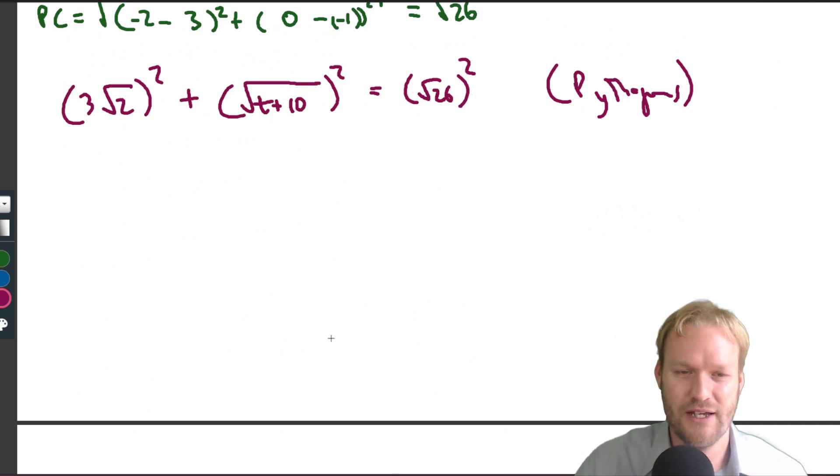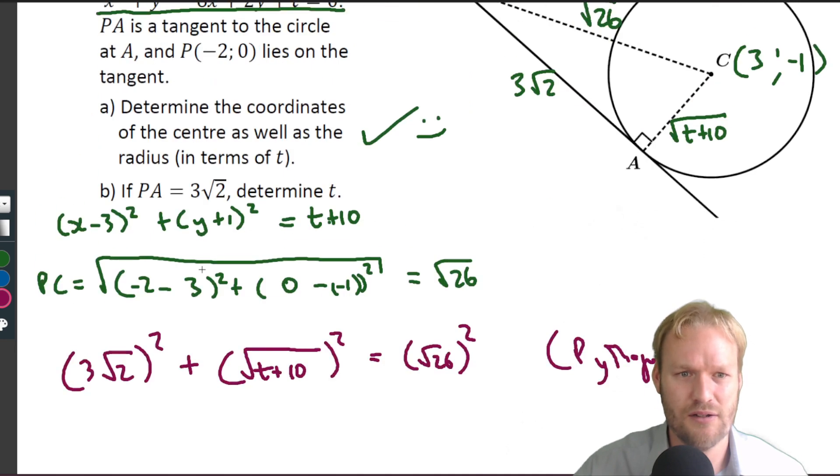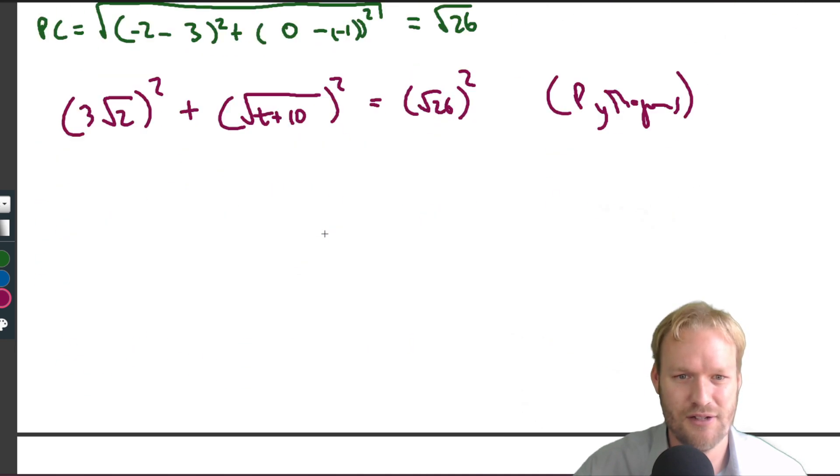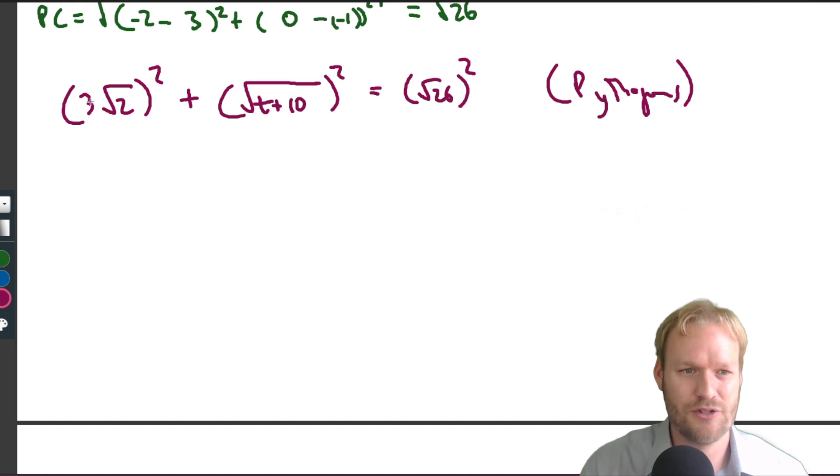And now I'm just going to move into algebra quite happily and say, okay, well let me get this right. For our radius, so t plus 10, yeah that seems right. Okay, so this one squared is 9 times 2, which is 18.